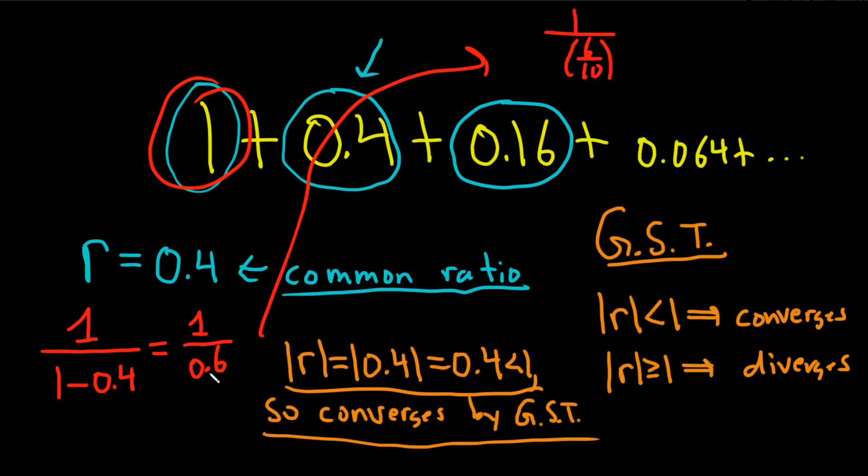Right? Because that's in the tenths place. And when you take 1 and divide by 6 tenths, you really multiply by the reciprocal, so 10 over 6. So you just get 10 over 6, which is actually 5 over 3, because 2 goes into 10 five times and 2 goes into 6 three times. So this infinite sum is convergent and it is equal to 5 thirds. I hope this video has been helpful.